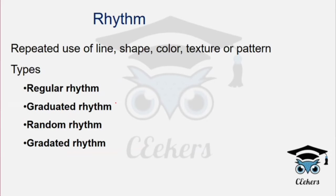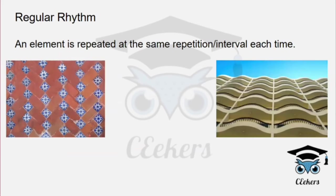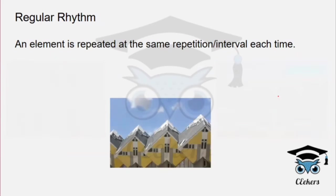Rhythm is the repeated use of line, shape, color, or texture in a pattern. There are types of rhythm: regular rhythm, graduated rhythm, and random rhythm. Regular rhythm means you repeat one element consistently — the same design is repeated.